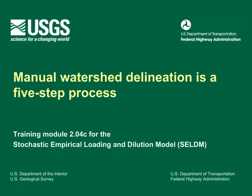Manual watershed delineation is a five-step process. This class exercise will let you practice manual delineation. This is training module 2.04c for the Stochastic Empirical Loading and Dilution Model, SELDOM. This presentation has 11 slides and will take about 4 minutes. Once you watch this video, try these class exercises at home.